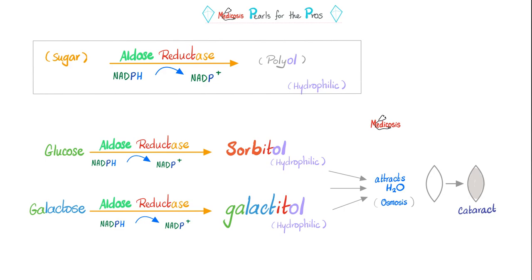Is alcohol water soluble or lipid soluble? Water soluble, of course — that's why some people can drink it. And sorbitol or galactitol are osmotically active; they can attract water. If I attract water to my clear lens, it becomes unclear — called a cataract. Probably the most common eye disease ever.